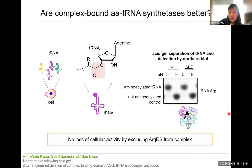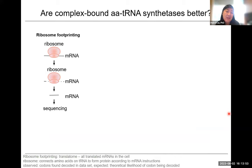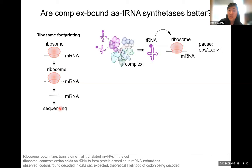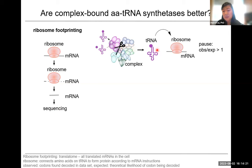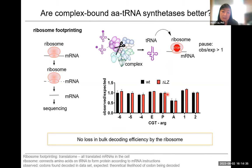Just because we have aminoacylated tRNA, does that also mean the ribosome has access to it? We used ribosome footprinting to look at whether ribosomes are increasingly paused on arginine codons if ArgRS is excluded from the multisynthetase complex. You isolate ribosomes, digest the surrounding mRNA, and see where the ribosome is sitting. If we're excluding ArgRS from the complex, does the ribosome have less access to tRNAs, which would be reflected in a pause score or observed versus expected occupancy at the A-site? Looking at all six arginine codons, we actually do not see any difference — the ribosome is equally able to decode arginine whether ArgRS is in the multisynthetase complex or not.